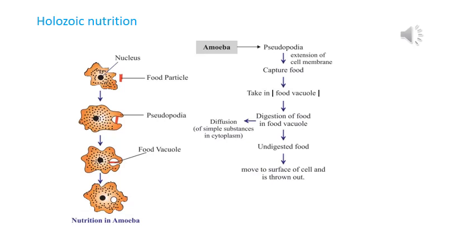Amoeba expels waste food material by the process of exocytosis. Endocytosis and exocytosis together are steps of phagocytosis. The entire process of holozoic nutrition in amoeba can be explained with the concept of phagocytosis, which includes two important steps: endocytosis and exocytosis. Please go through the explanation and follow the slides carefully. Thank you.